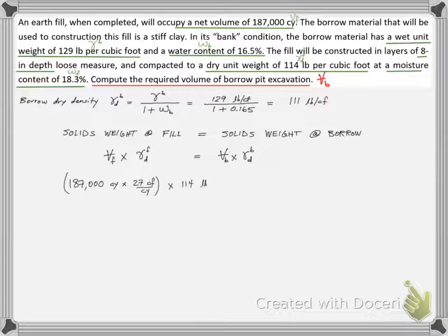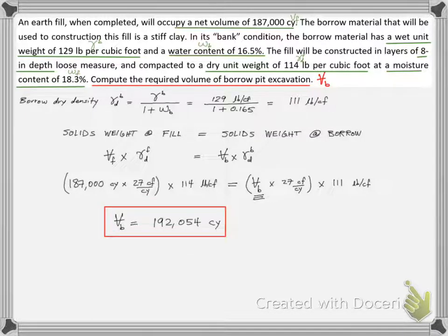We plug in all the values we have except for the volume of the borrow soil. We solve for the single unknown and finish the exercise by finding that the contractor will need around 192,000 bank cubic yards of soil to compact a fill volume of 187,000 compacted cubic yards.